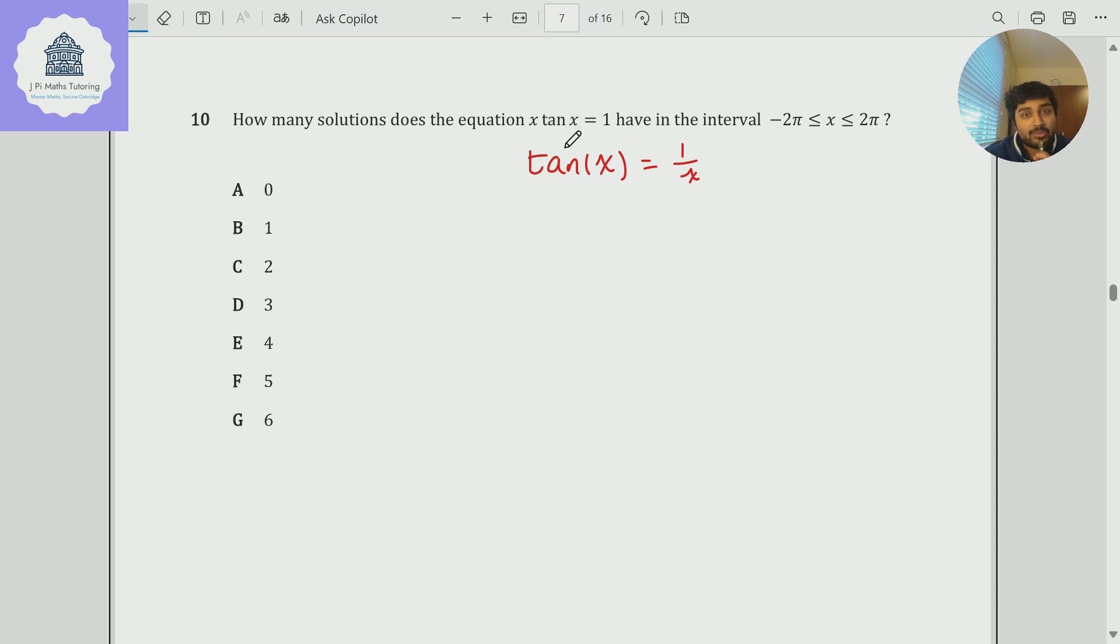Now I know how to sketch y equals tan x, and I also know how to sketch y equals 1 over x. So I can sketch both of those graphs and look for the number of points of intersection.